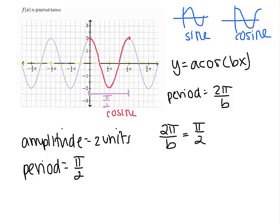Okay, cross multiply. So I'll get 4π equals b π. And if I just divide both sides by π, b equals 4.